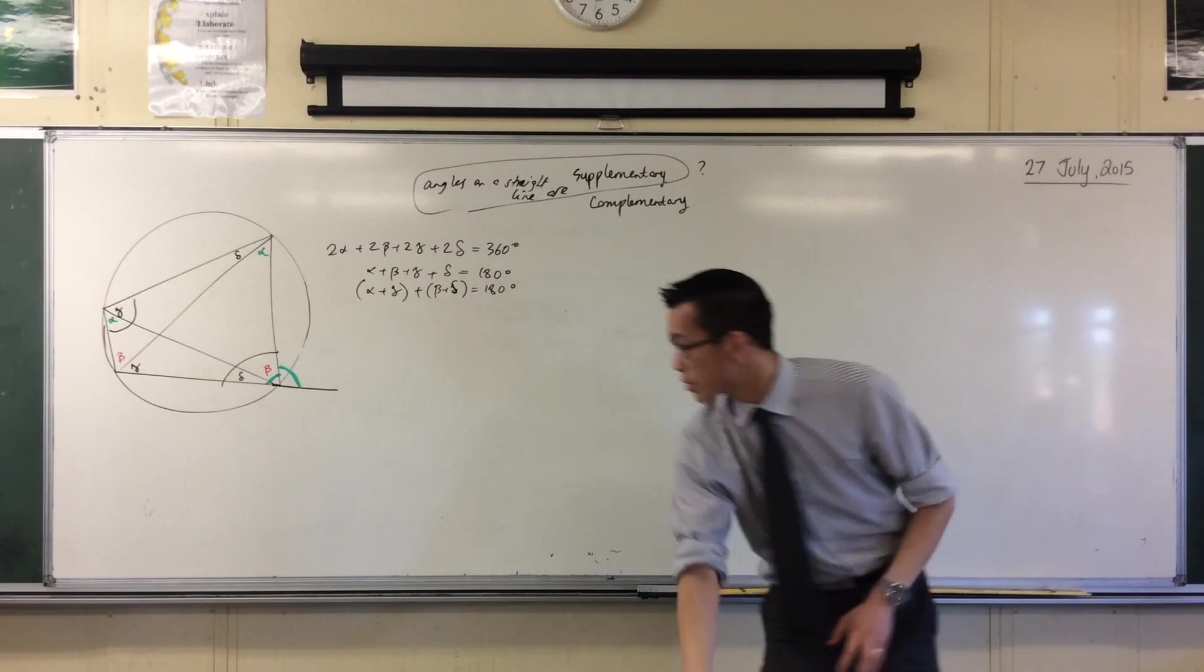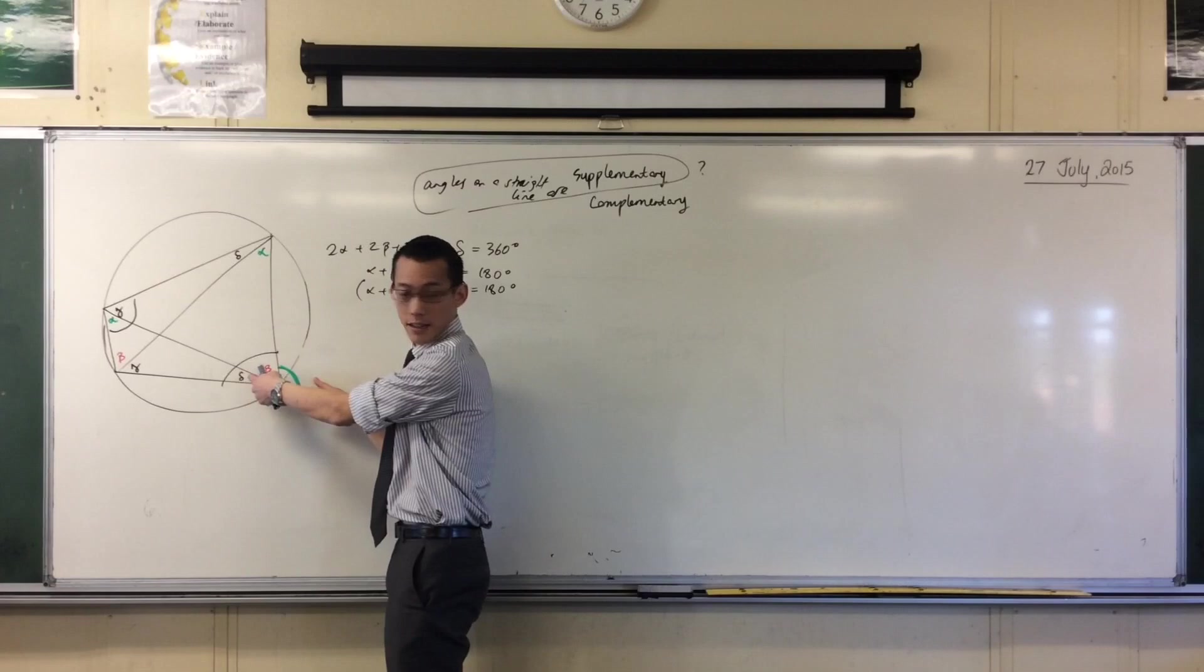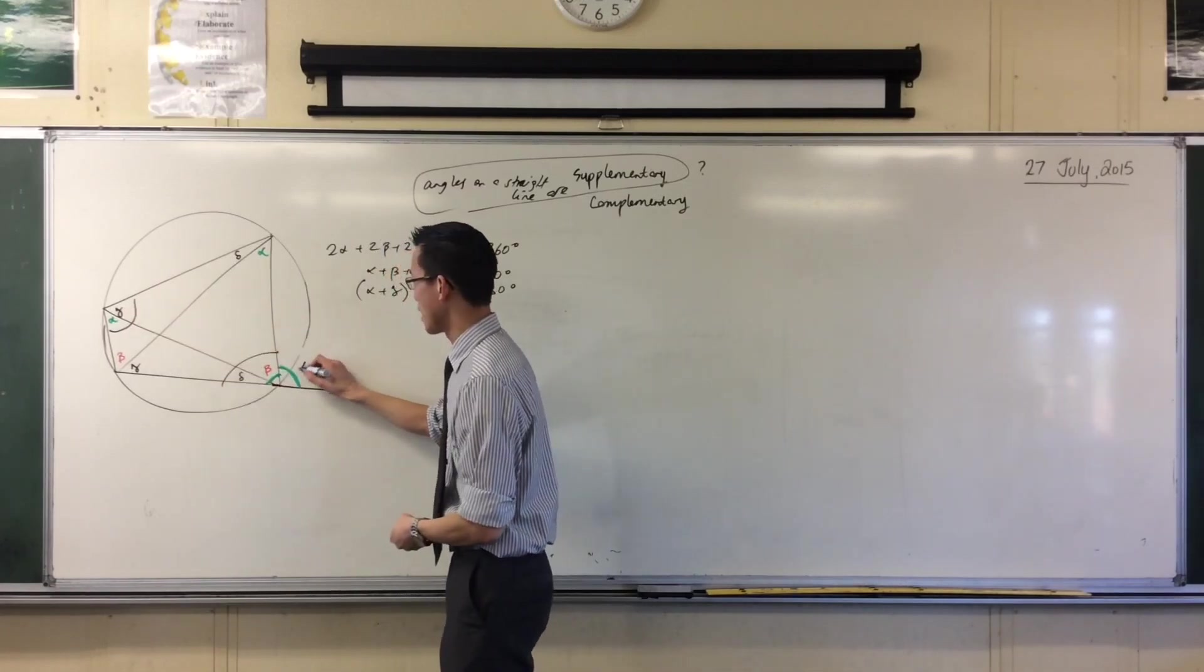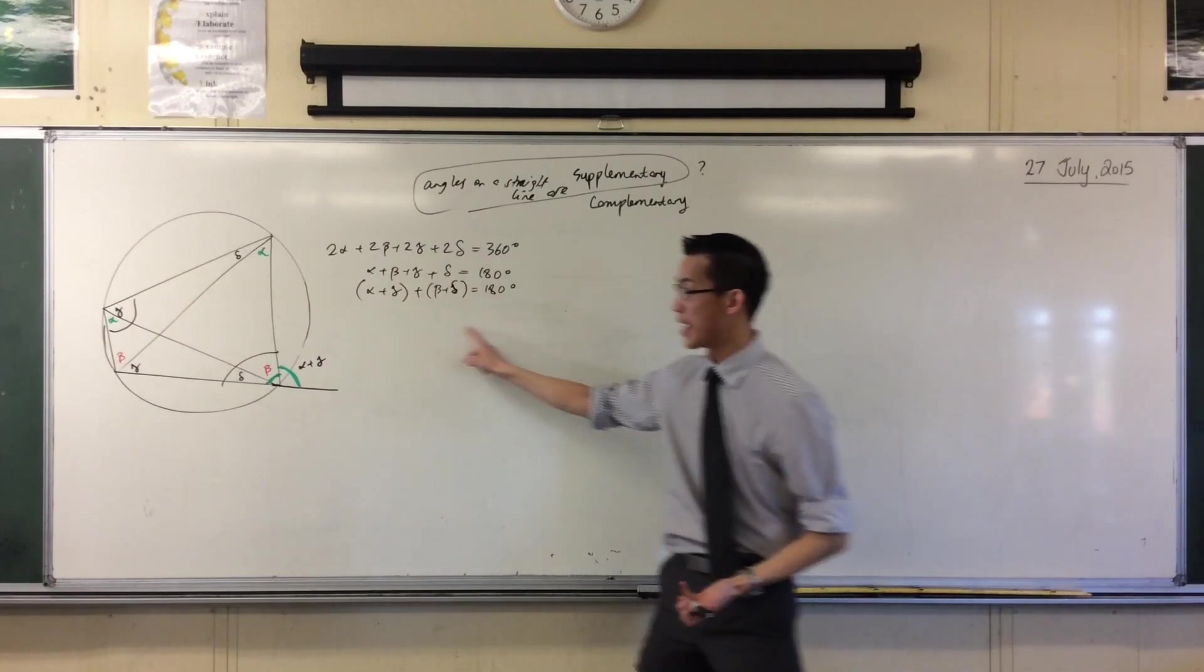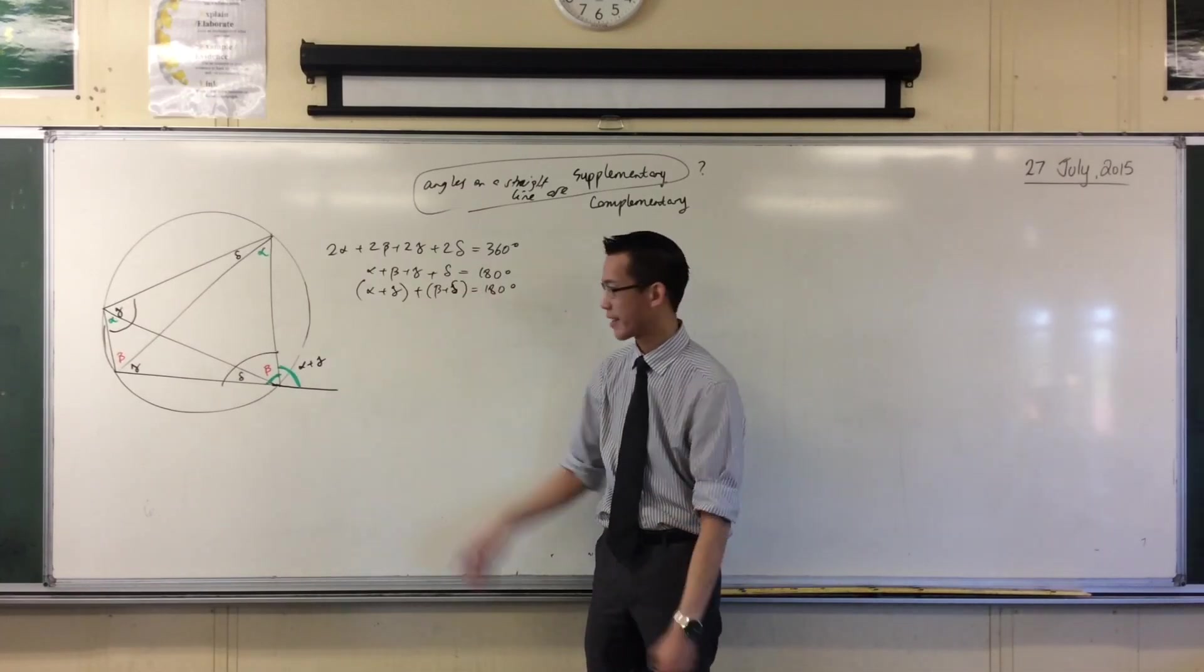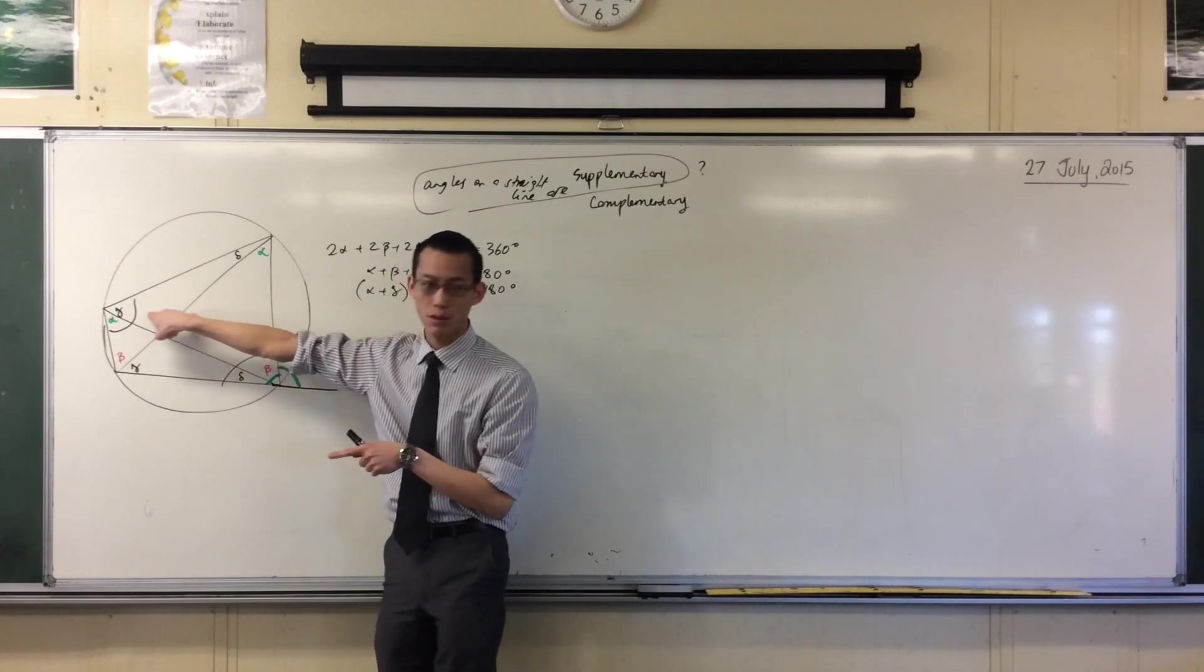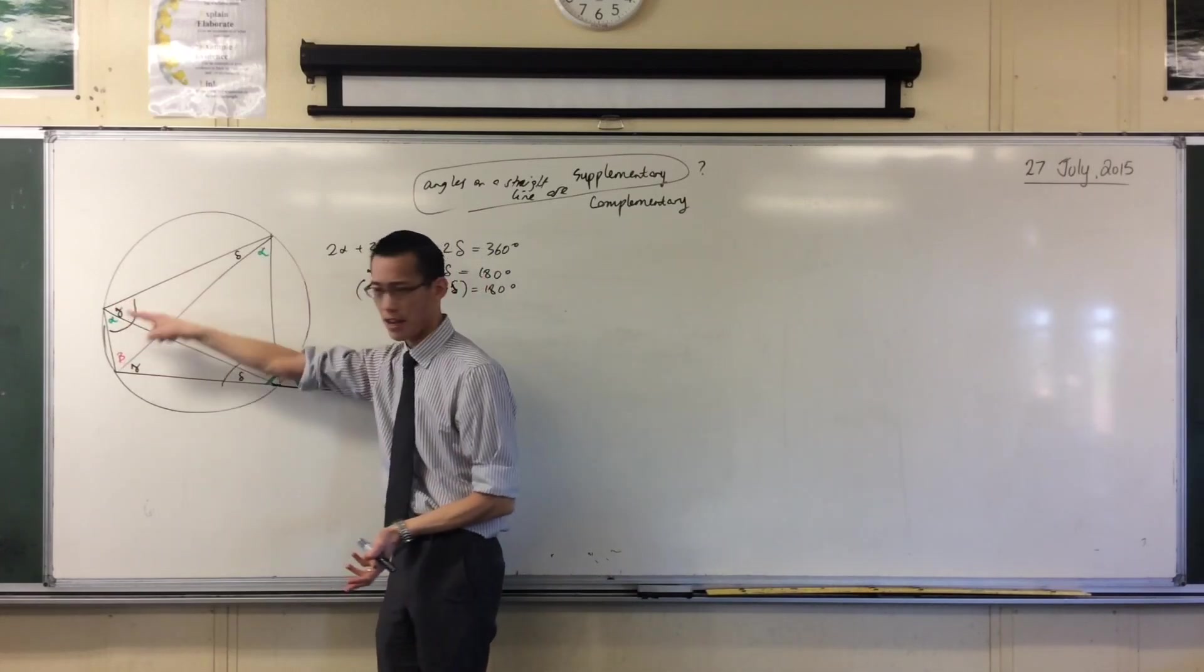These add up to 180 as well. Yeah? You see that? So if these two add up to 180 and these two add up to 180, then this guy over here must be exactly the same as that one over there. It has to be alpha plus gamma. Right? To get the four different angles to be 180 degrees. Okay? So the exterior angle of a cyclic quadrilateral is equal to the opposite interior angle. You do have to say the opposite one, because it's not just any of them, it's only that one.